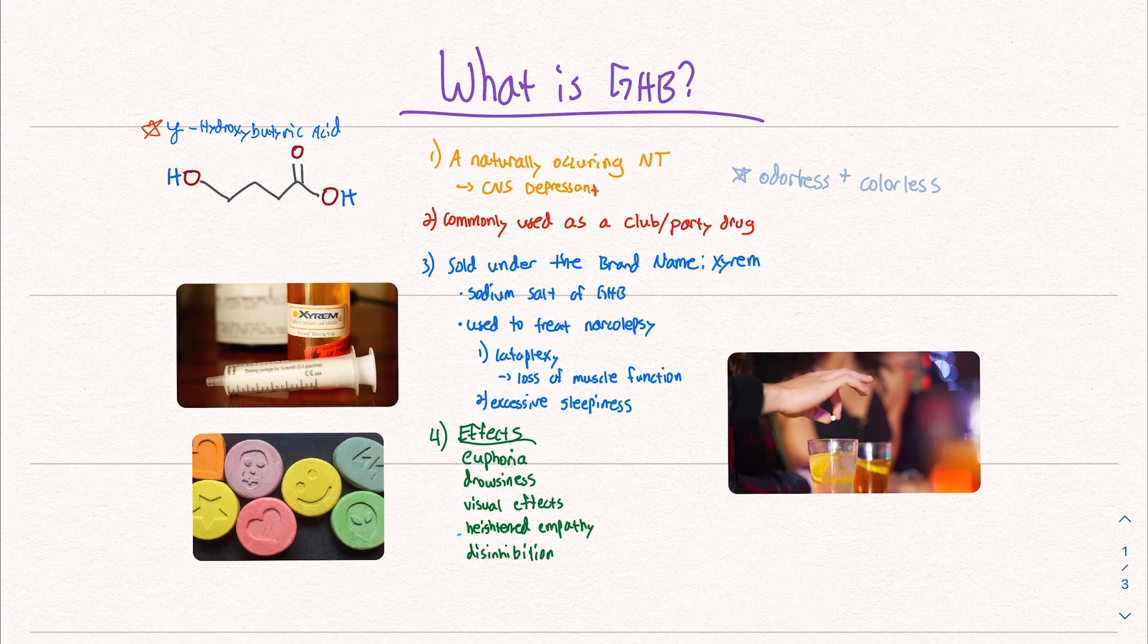GHB stands for gamma hydroxybutyric acid. This is the structure right here. It is a naturally occurring neurotransmitter.